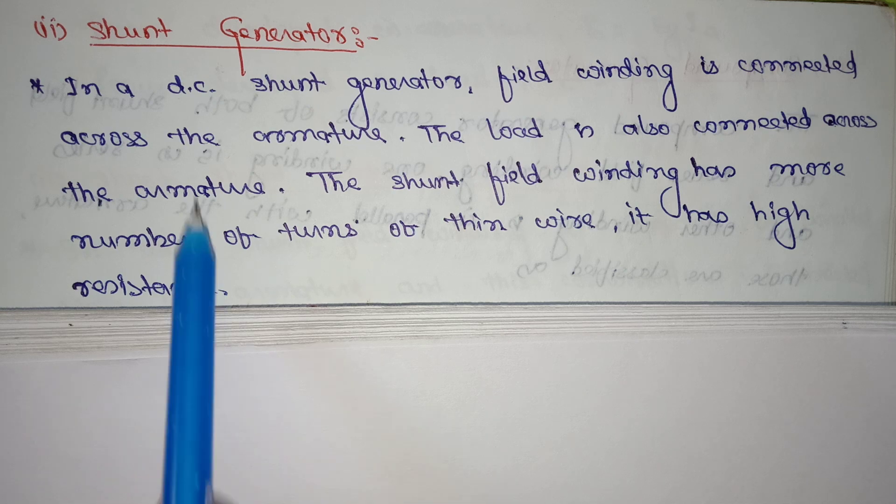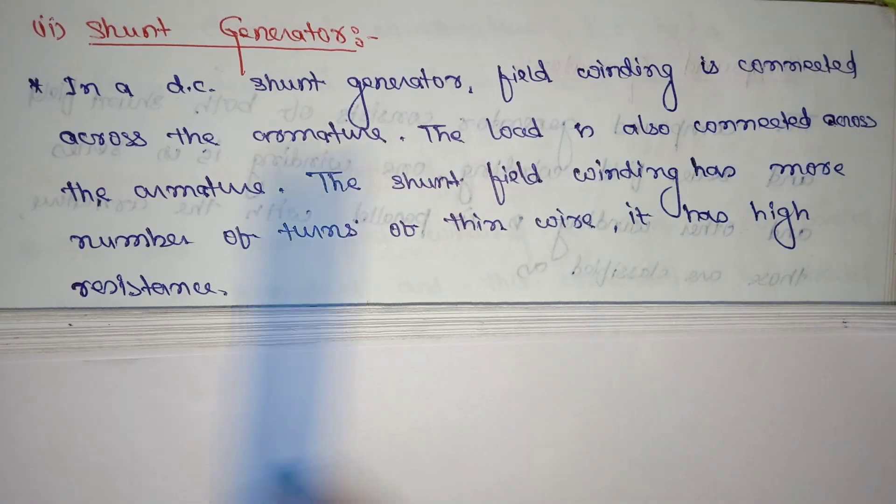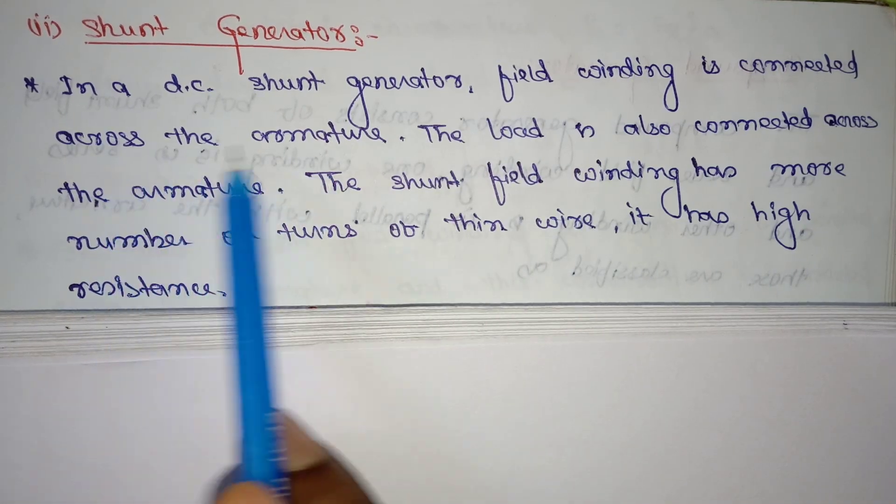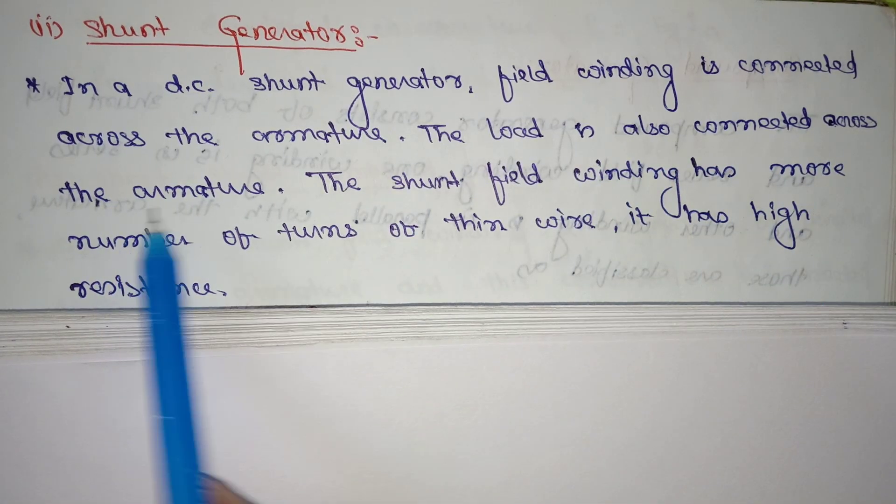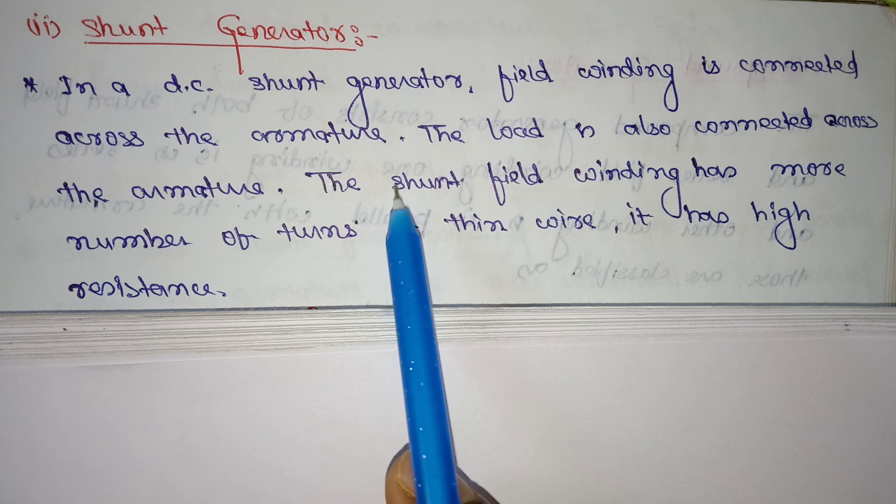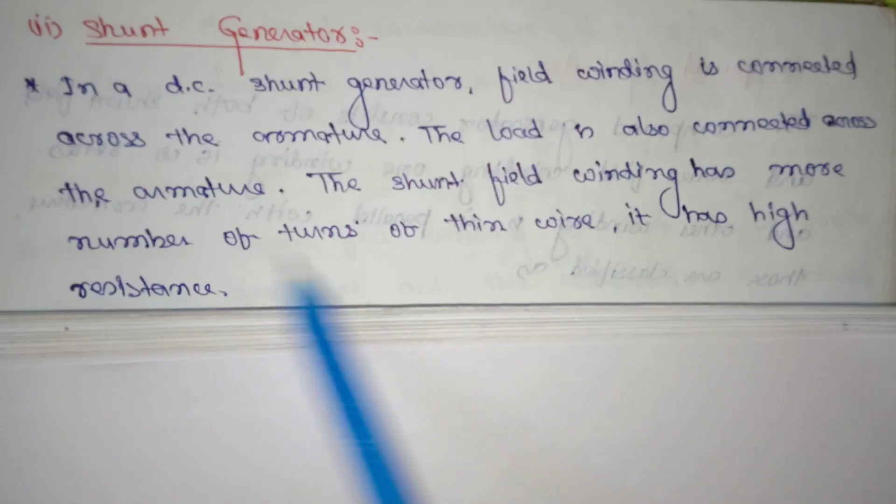In a DC shunt generator, field winding is connected across the armature. The load is also connected across the armature. The shunt field winding has more number of turns of thin wire and has high resistance.